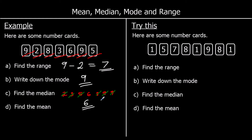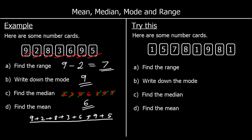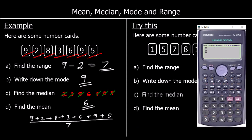And finally, to find the mean, we add up all the numbers and divide by how many there are. So we're going to do 9 plus 2 plus 8 plus 3 plus 6 plus 9 plus 5, divided by 7. There are 7 numbers. And that is 6.